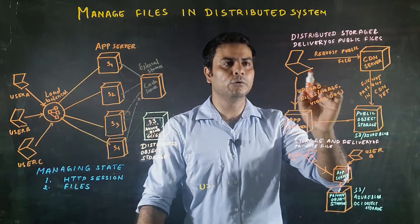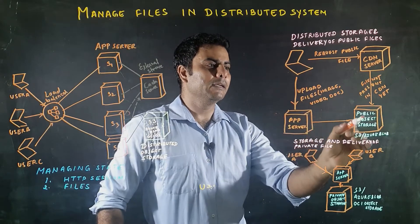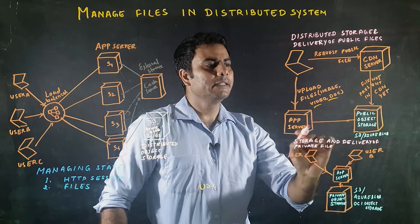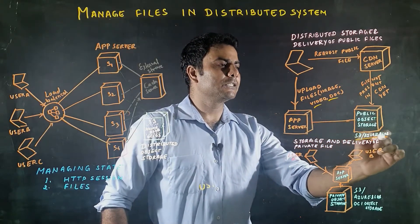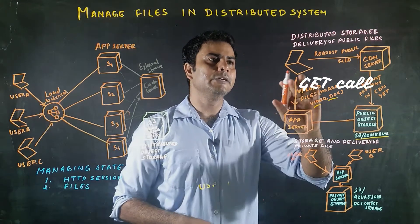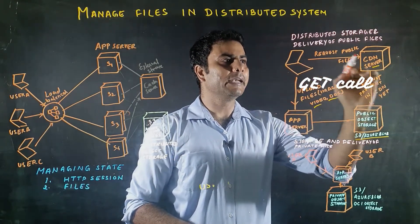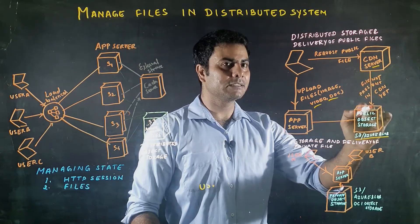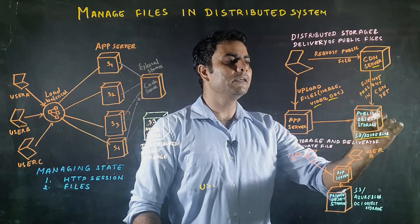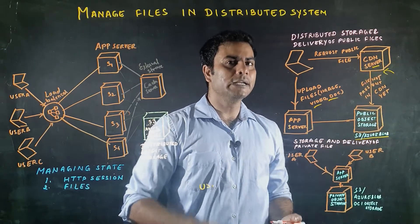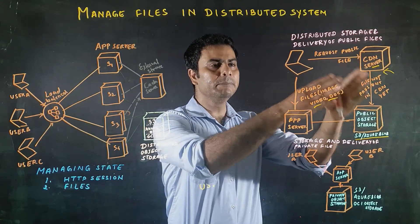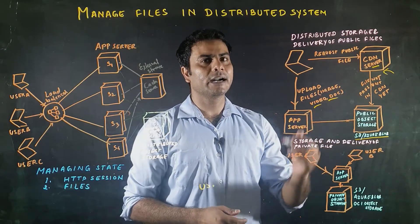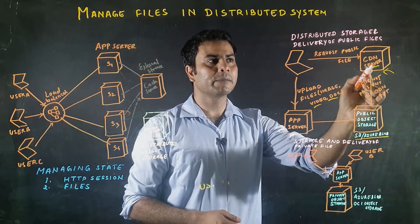Looking at the flow here, users can upload files — images, videos, or documents — to the object storage system. When a user makes a request to the CDN server, if the file is not available on the CDN, the call goes to the distributed object storage system and a copy of the file is saved at that CDN location. In subsequent requests, all content is served from the CDN server instead. CDN, or Content Delivery Network, provides content from the nearest location.